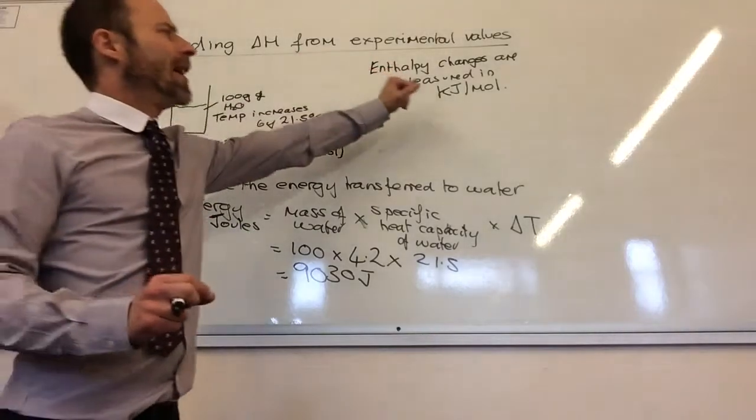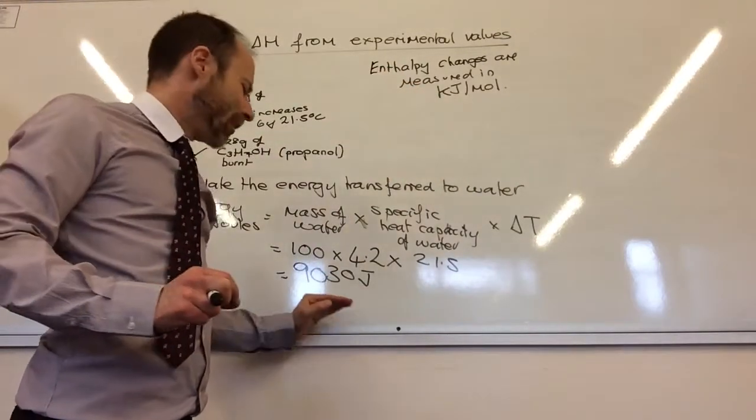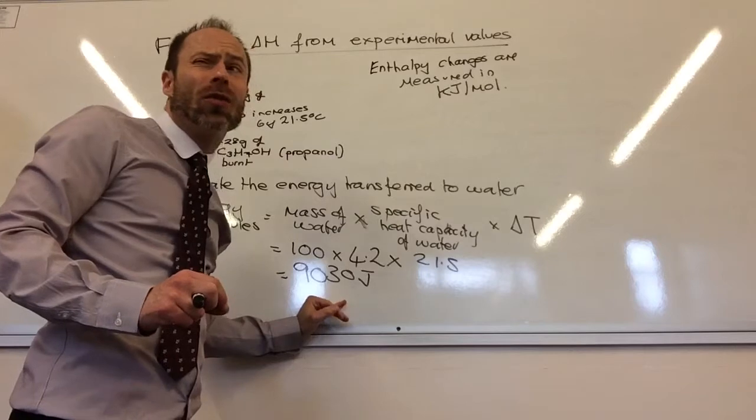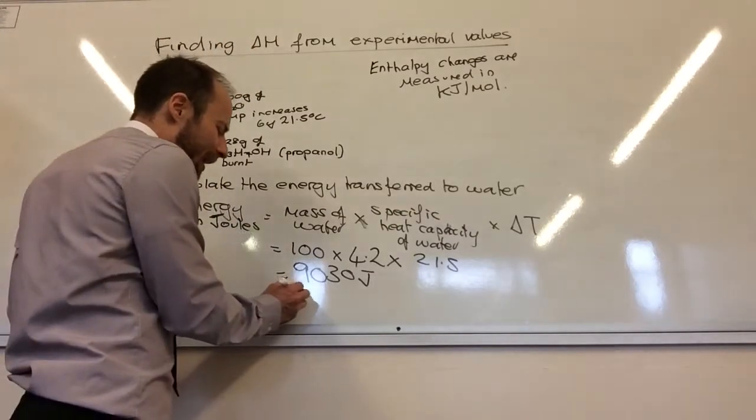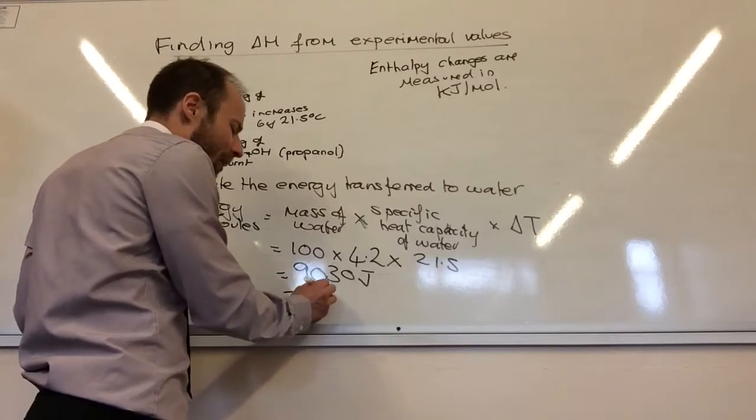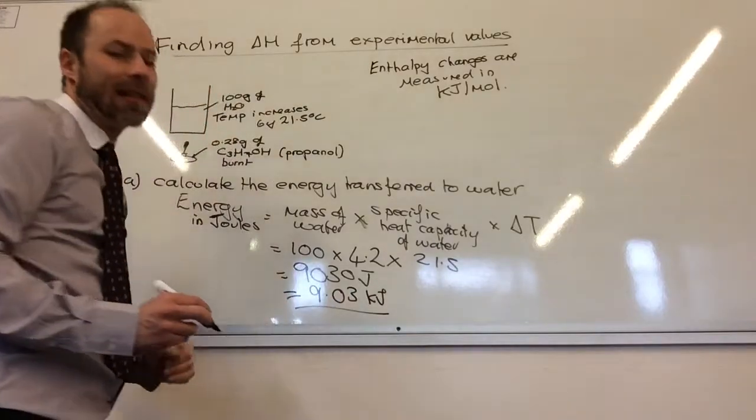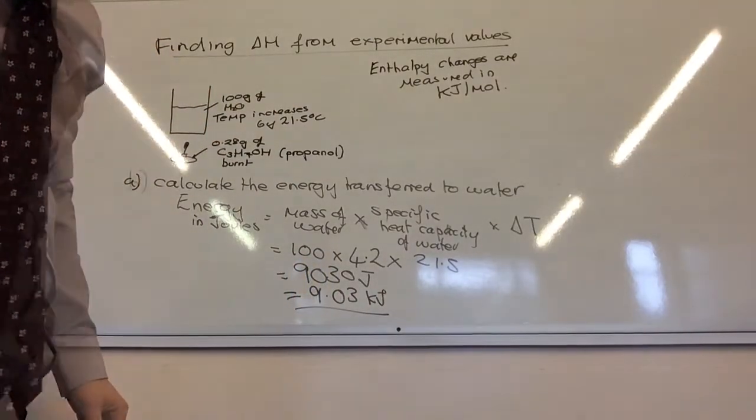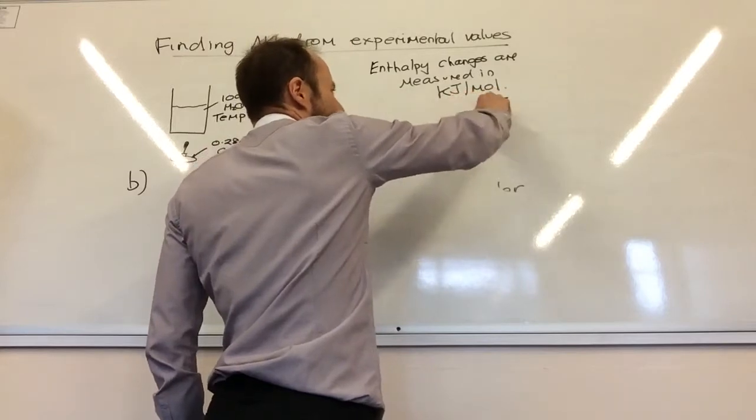If you notice, enthalpy change should be measured in kilojoules per mole. I've got the heat, the energy, in joules. What do I need to convert that into? Kilojoules. I divide by 1,000, 9.03 kilojoules. That's the answer for the first part. The answer has to be in kilojoules per mole.